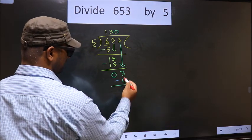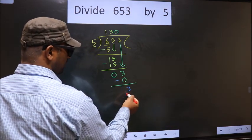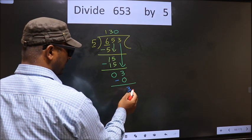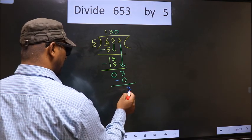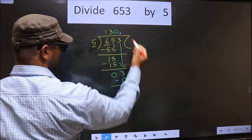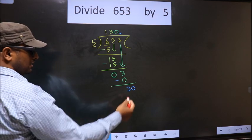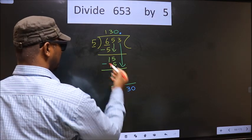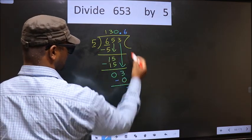Now you subtract. 3 minus 0, 3. Over here we did not bring any number down. And 3 is smaller than 5. So now you can put a dot and take 0 here. So 30. When do we get 30 in five table? 5, 6, 30.